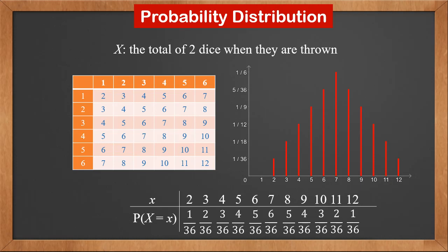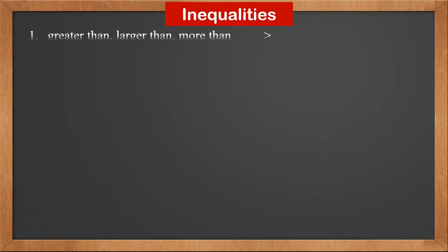If we put all probabilities in a graph, we can see that probabilities are symmetric about 7. When dealing with probabilities, we may see some inequalities. If it is 'greater than', 'larger than', or 'more than', we use the greater than operator.